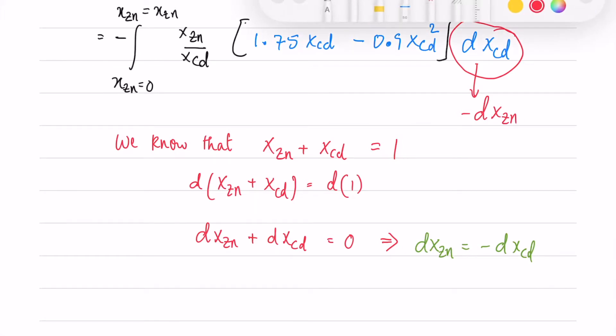So this is nothing but minus dxzn. We can do the integration from the same intervals.